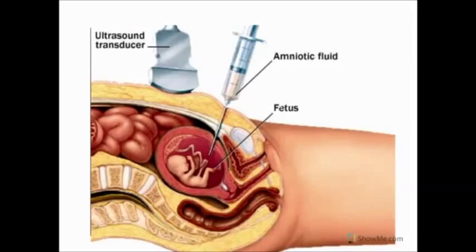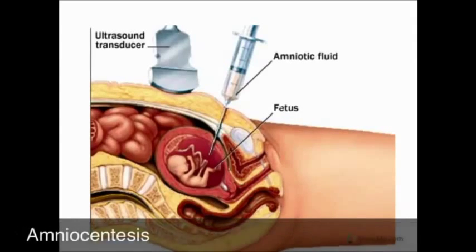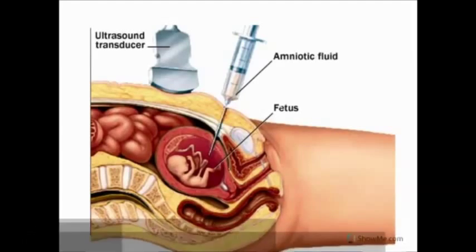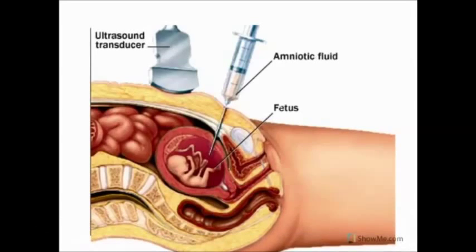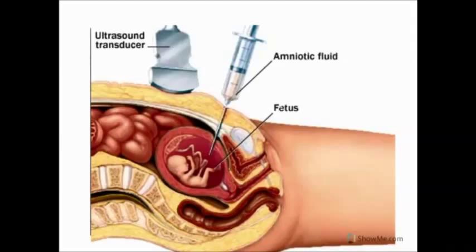So how do we get a karyotype of a baby that's not born yet? Well, we use something called amniocentesis. Amniocentesis, or an amniotic fluid test, is a medical procedure used in prenatal diagnosis of genetic disorders and fetal abnormalities. A small amount of amniotic fluid, which contains fetal tissues, is extracted from the amniotic sac. Once we take it out, the fetal DNA can be examined for genetic abnormalities using our karyotype.